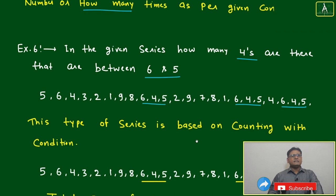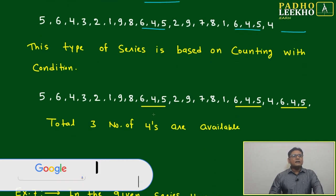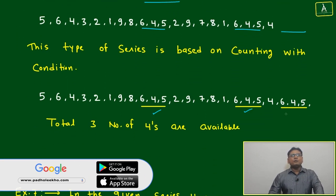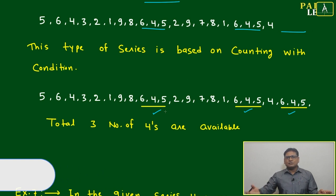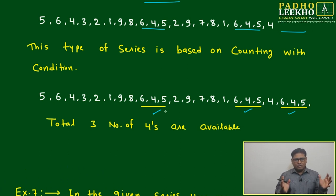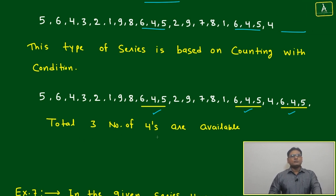These three fours only are possible which are following the constraint or given condition. It must be preceded by six and followed by five. This four is lying exactly between six and five. Total three number of fours are available.